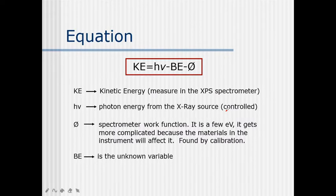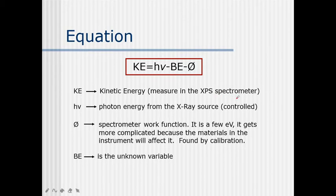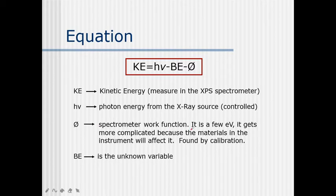We are trying to understand the binding energy of a particular electron in an orbital. The equation is: kinetic energy KE = hν − binding energy − φ. KE is the kinetic energy measured in the XPS spectrophotometer. hν is the photon energy from the X-ray source — the amount of energy given through the X-ray is already controlled by us.